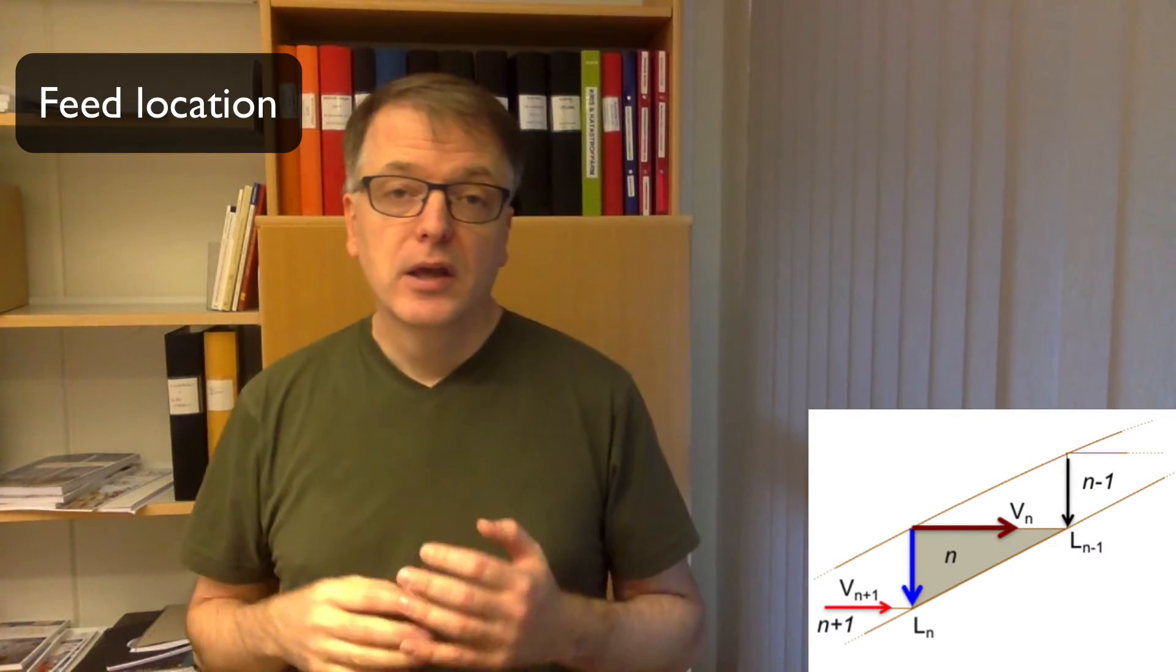What about the feed location? Well, when you draw the vertical lines, when you draw these triangles, you draw the line to the mass balance, to the operating line. To draw as few as possible, to what operating line should you draw?